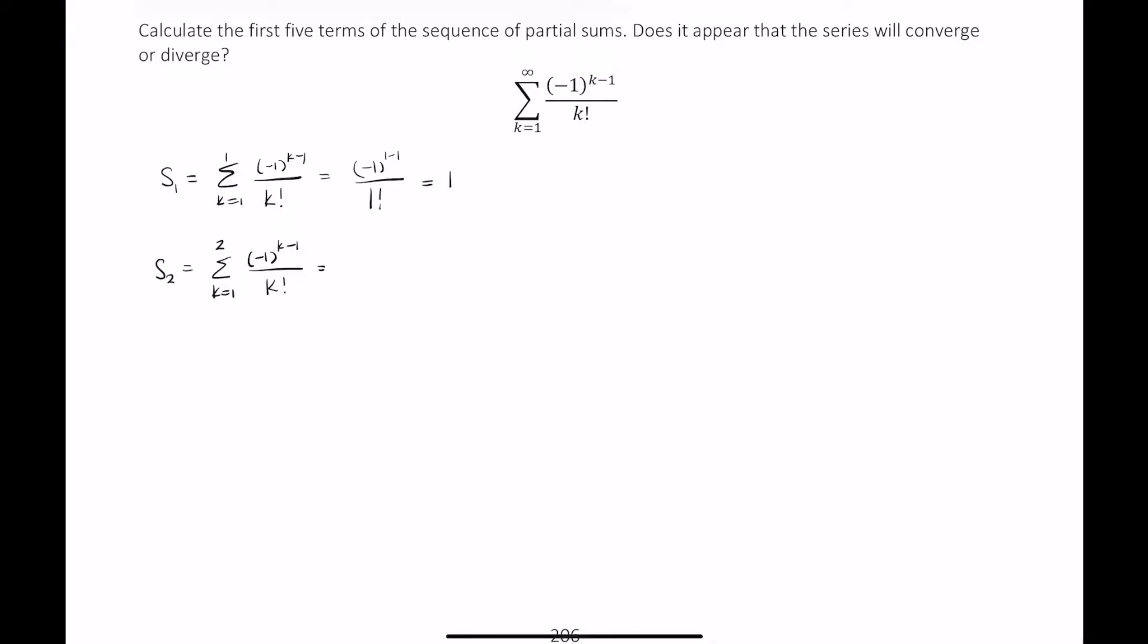So we could do this work again here, but I know this first partial sum is going to be 1. So I'm just going to write this as 1 plus. Again, this 1 comes from here. And now I'm going to go ahead and put a 2 in for each k. So this is (-1)^(2-1) over 2 factorial. And this will work out to be 1 half.